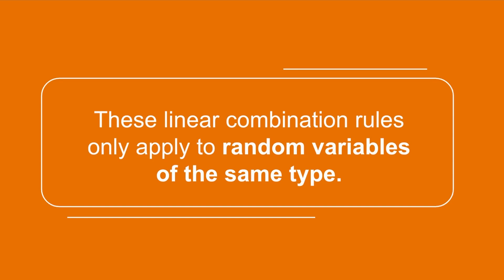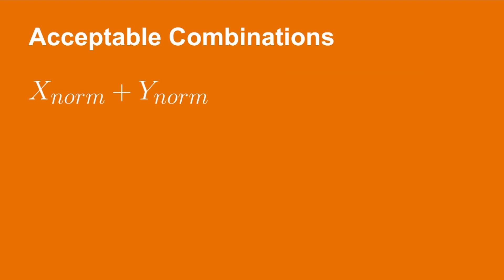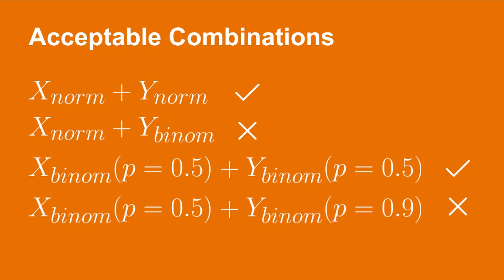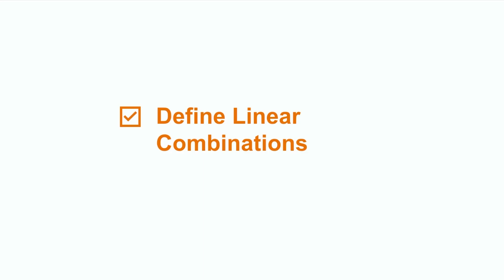Before we close, it is crucial to note some limitations. These linear combination rules only apply to random variables of the same type. For example, we can combine two normally distributed variables, but not a normally distributed variable and a binomial random variable. Similarly, we can combine binomial random variables with the same underlying probability of success, but we cannot directly combine random variables with mismatched probabilities.